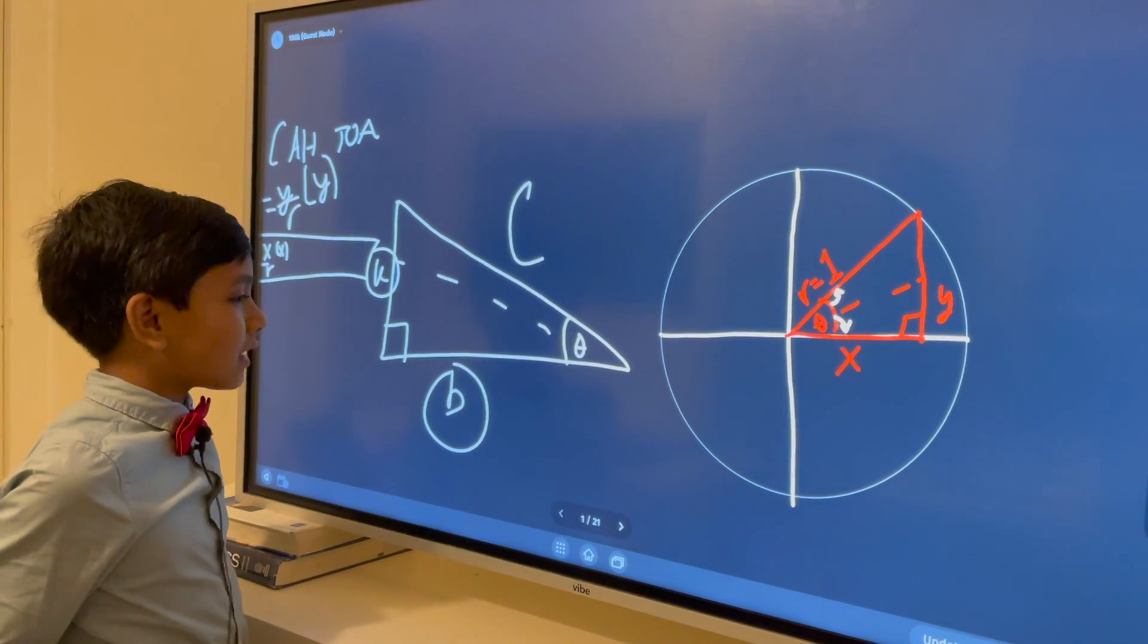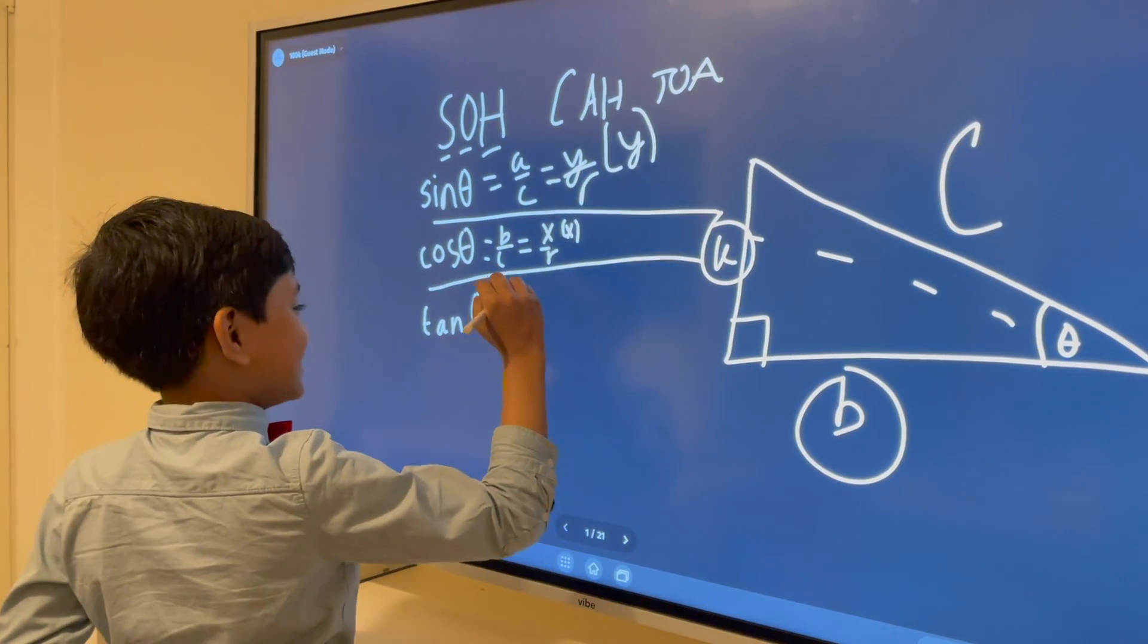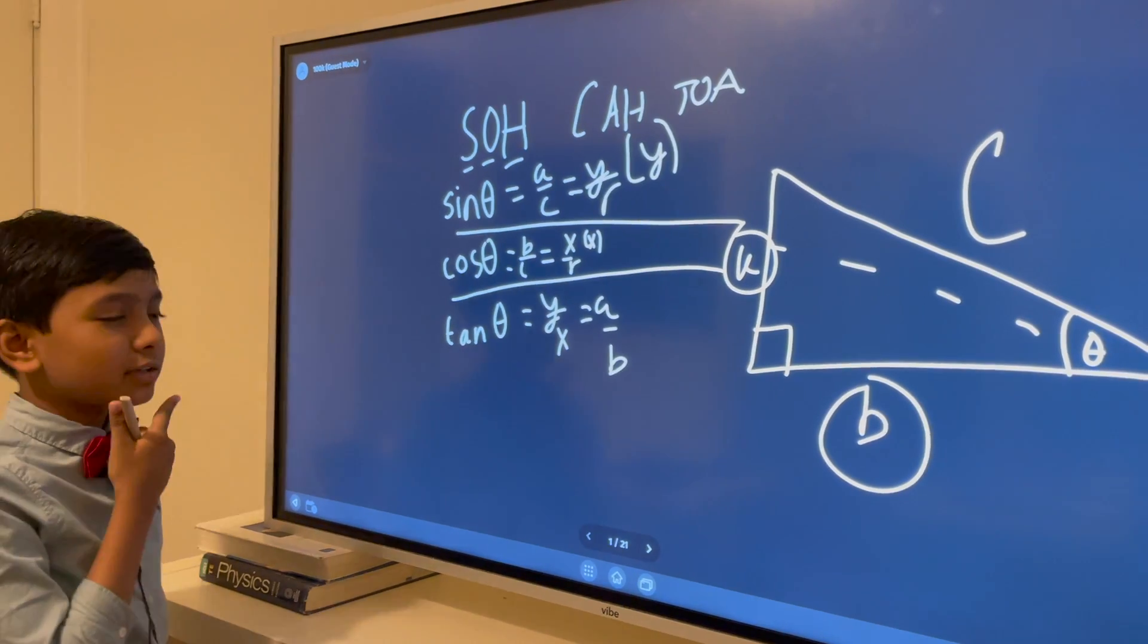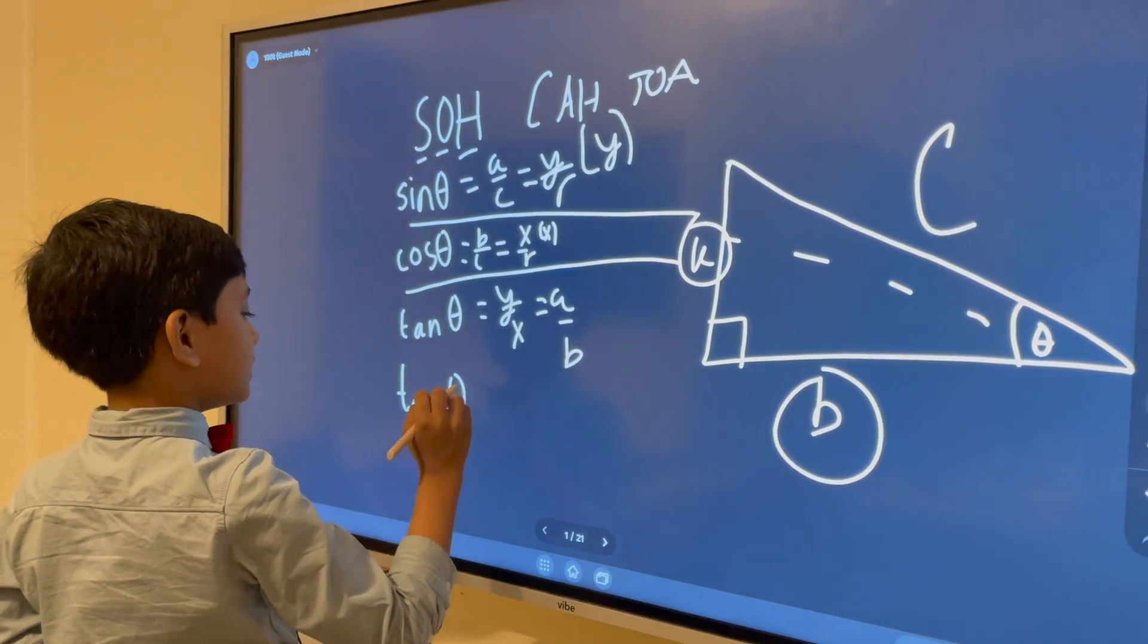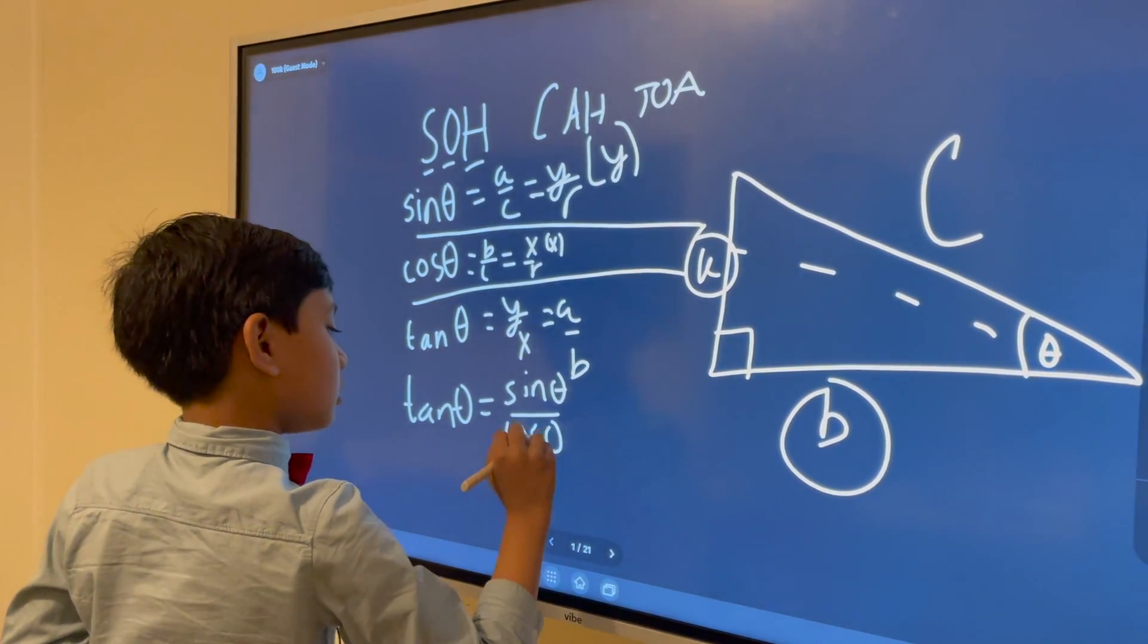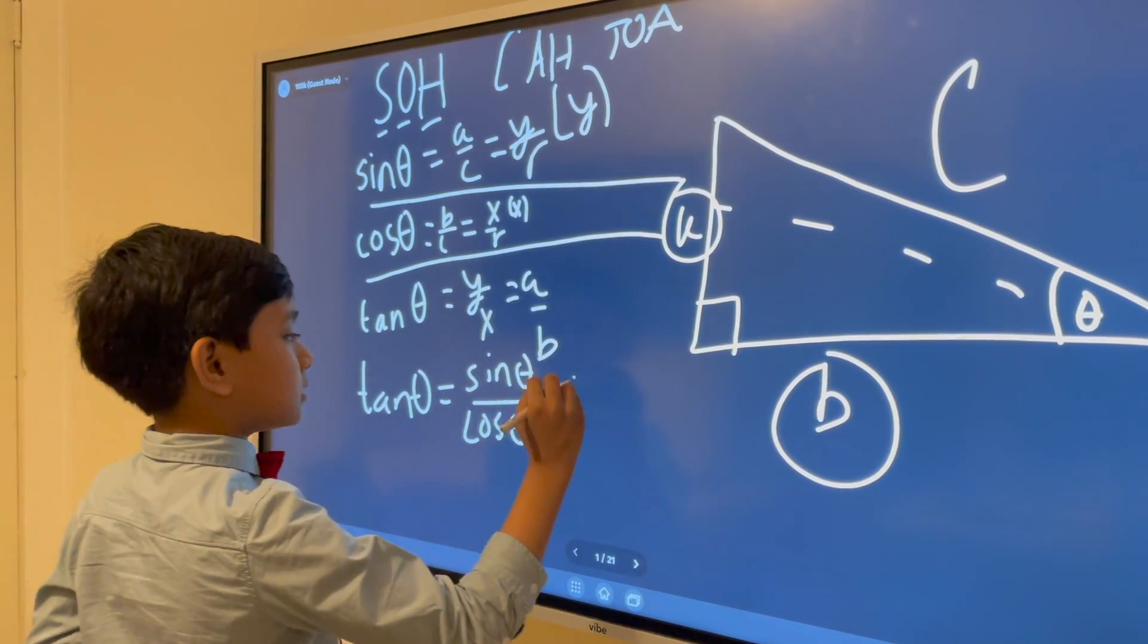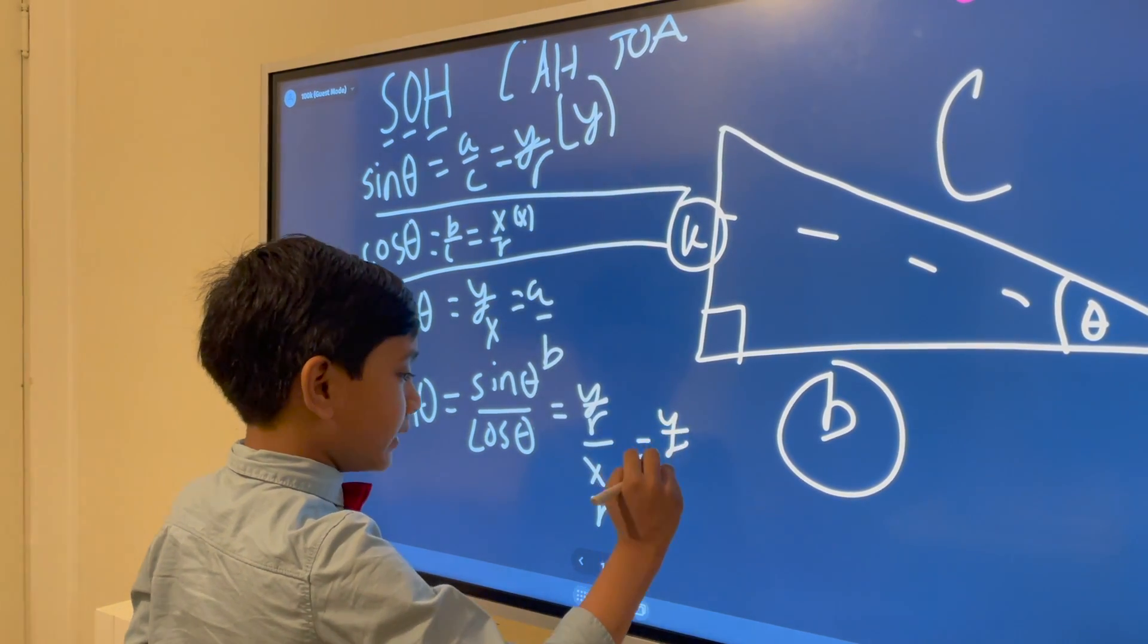So, tangent is equal to sine over cosine. Why is that, may I ask? Well, let's do some math. That's just going to be Y over R over X over R, which is a mouthful, but stick with me.